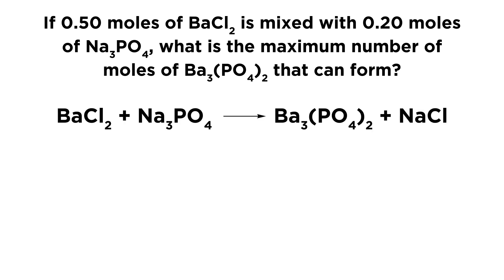The first thing we're going to want to do is write out the chemical equation. We know that barium chloride is going to react with sodium phosphate, and the products are going to be barium phosphate and also sodium chloride for the other two ions that are not associated with barium phosphate.